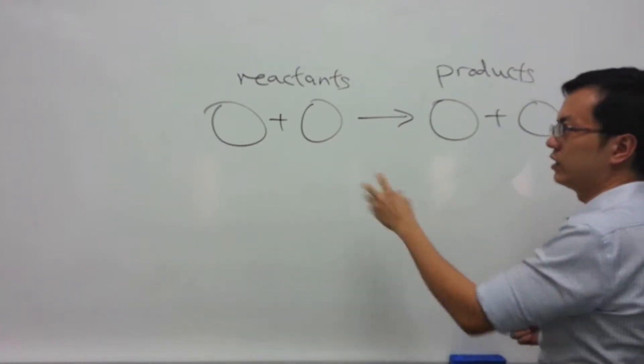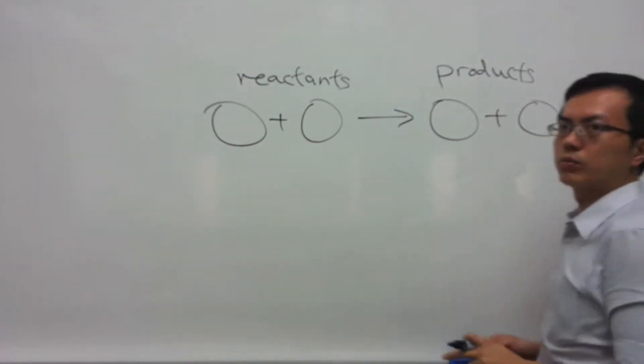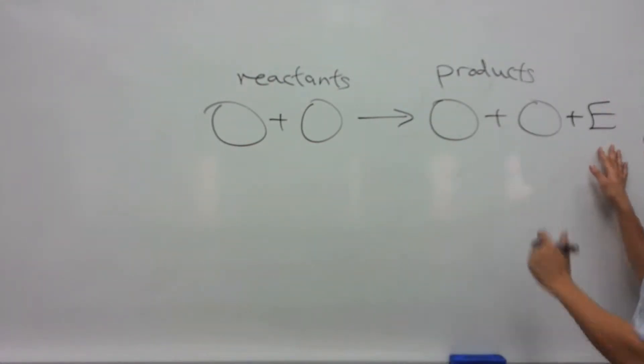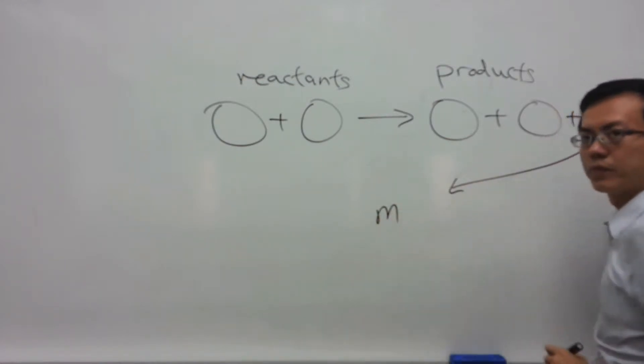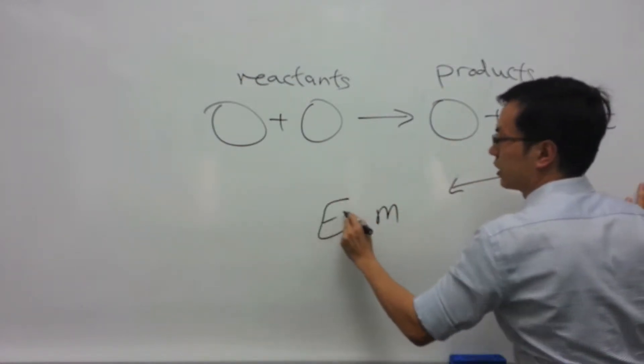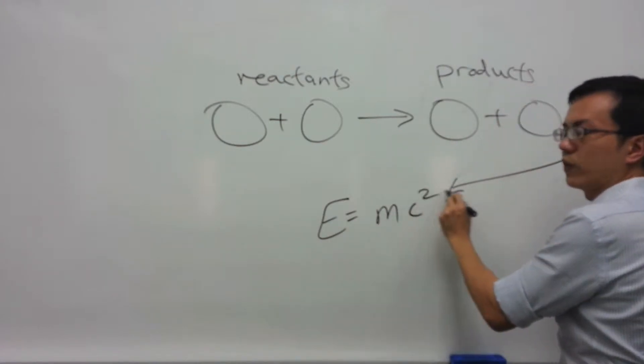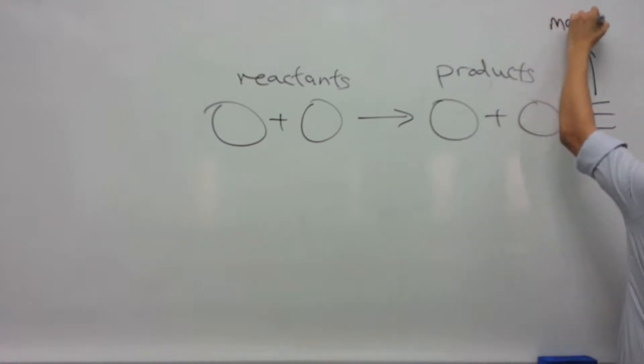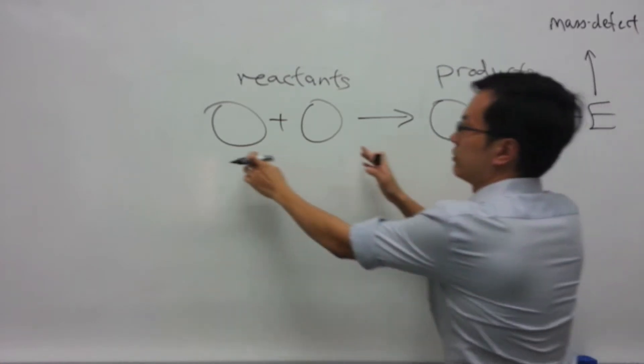If this nuclear reaction produces energy, the energy will be found together with the products. This energy comes from the mass defect M, and the energy can be calculated by the equation E equals MC squared. This energy is associated with the mass defect, or the difference in mass between the products and the reactants.